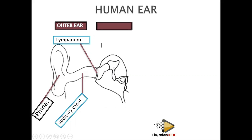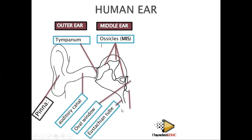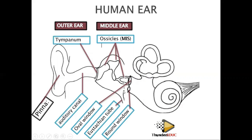The middle ear is made up of three bones which we call ossicles — the malleus, the incus, and the stapes. Then it has the Eustachian tube, which is the tube that connects to the mouth. When you yawn, you feel air going through the ear because of the Eustachian tube. There is also the oval window, which is oval-shaped, and the round window, which is round-shaped.